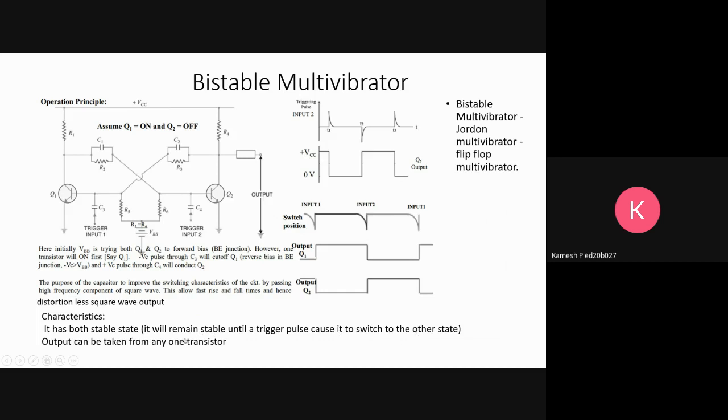When one trigger pulse is given, the output changes, and when another trigger pulse at input 2 is given, the output changes to the opposite side. This can also be given in a single position - in C4 itself, trigger pulses of opposite directions can be given, one in positive direction and one in negative direction. That's about multivibrators.